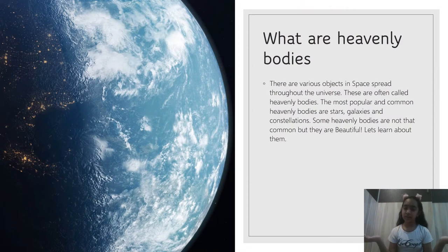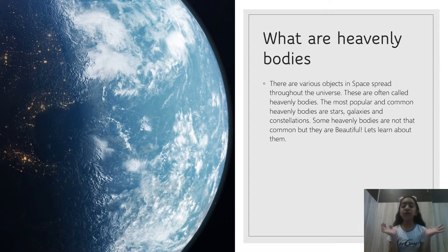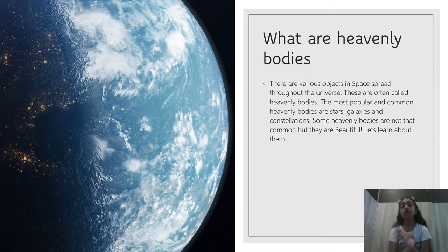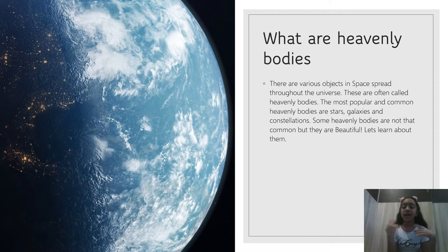What are heavenly bodies? Heavenly bodies are various objects in space which are spread across the universe. The most popular and the most common heavenly bodies in space are stars, constellations and galaxies. Some heavenly bodies are not that common but they are beautiful. Let's learn about them.